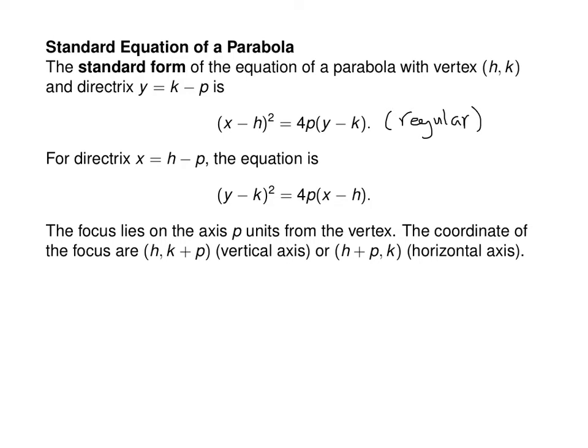For a sideways parabola, the equation is (y minus k)² equals 4p(x minus h). One question is where the 4 comes from. I can show you in the case of a parabola with vertex at the origin, and from that you can translate it to shift the vertex to point (h, k).